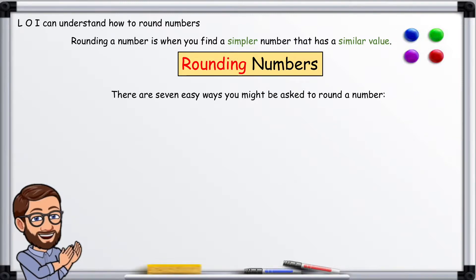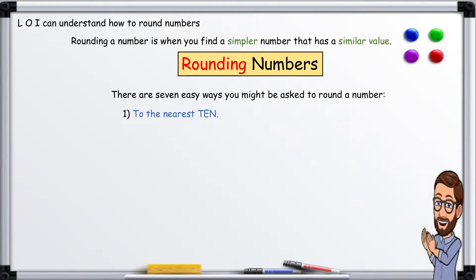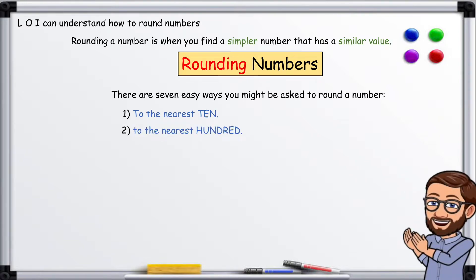There are seven easy ways you might be asked to round numbers: one, to the nearest ten; two, to the nearest hundred; three, to the nearest thousand; four, to the nearest ten thousand;